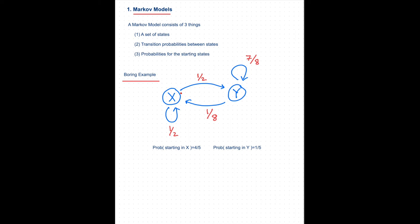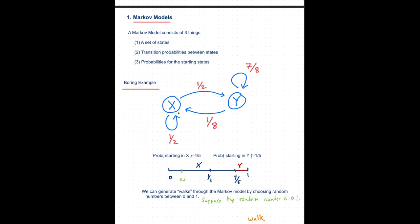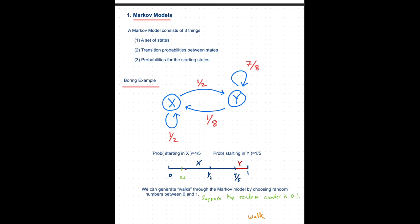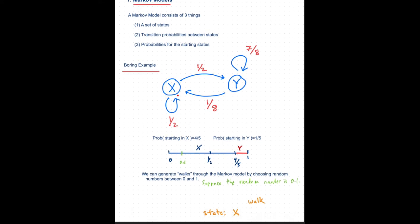Once you start in a state, you have a notion of steps in this Markov model. At each step you pull a random number. If I'm in state X, I transit to state Y with 50% probability, or I stay in state X with 50% probability — that's what this so-called self-arc means. So the three things are: the set of states, the transition probabilities to move between states or stay in the same one, and the probabilities for the starting state. That is a Markov model.